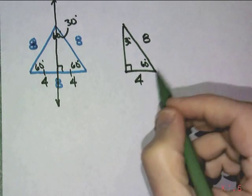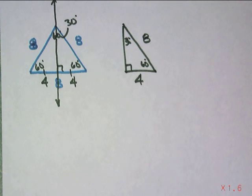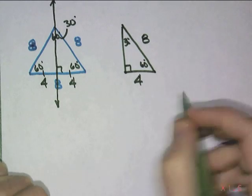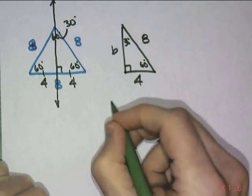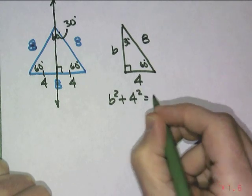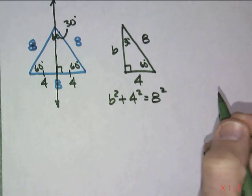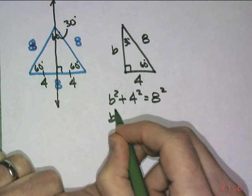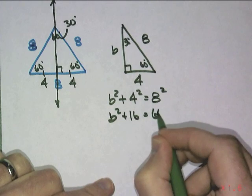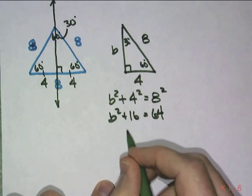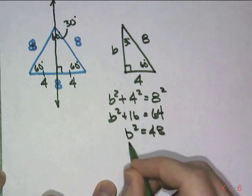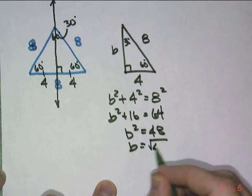And the only thing I'm missing is this side length right there, which is the altitude of that equilateral triangle. So we can figure that out, right? If I make that b squared plus 4 squared equals 8 squared. And that would be b squared plus 16 equals 64. Subtract 16 on both sides, we would get 48. And so b is equal to the square root of 48.